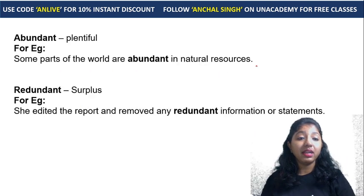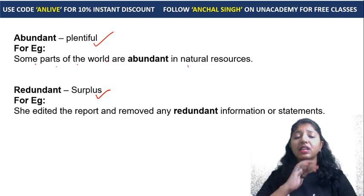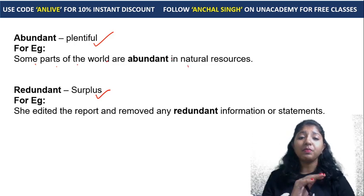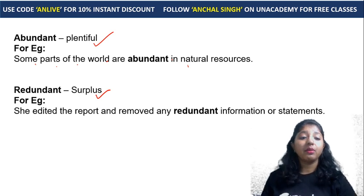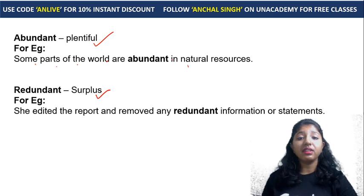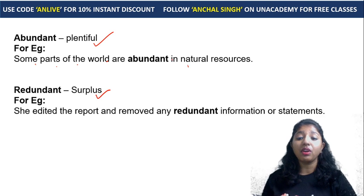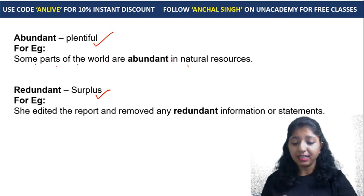Abundant means plentiful. Redundant means surplus or additional. For example: 'Some parts of the world are abundant in natural resources.' And: 'She edited the report and removed any redundant information or statement' — meaning any surplus information, she removed it.